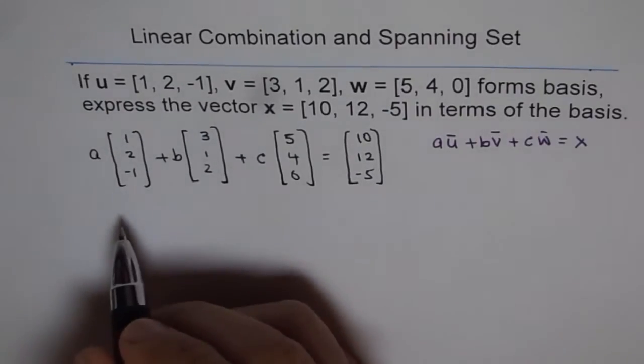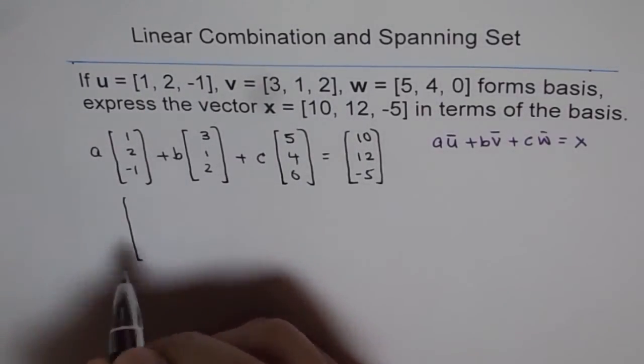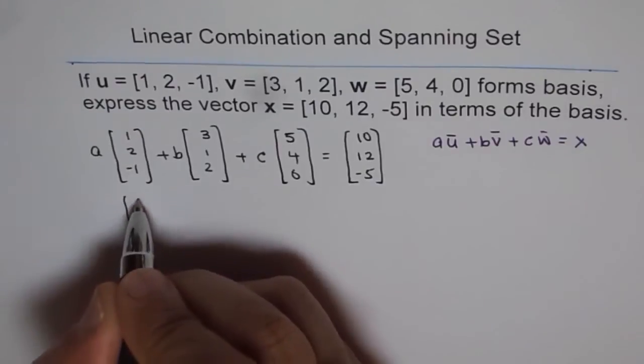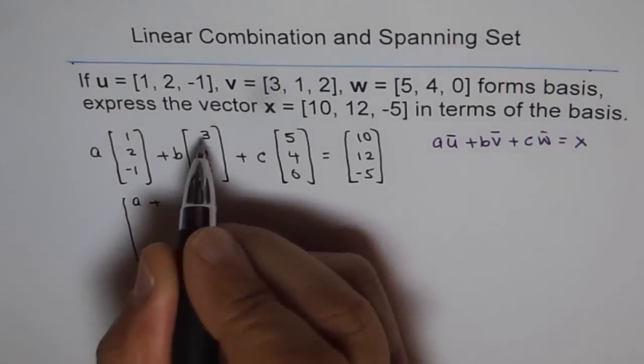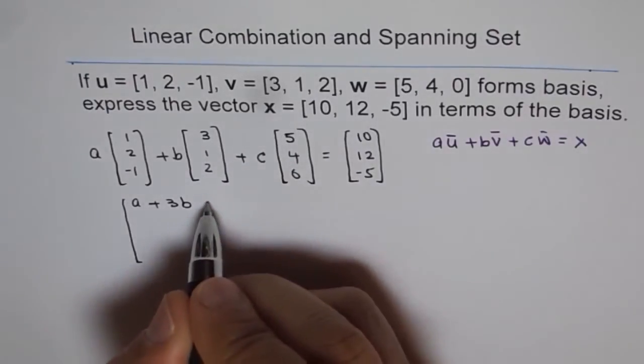Now when you do this, then what do you get? So we can get from here, so a times 1 is a, plus b times 3 is 3b, plus c times 5 is 5c.